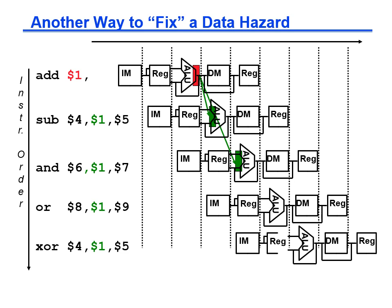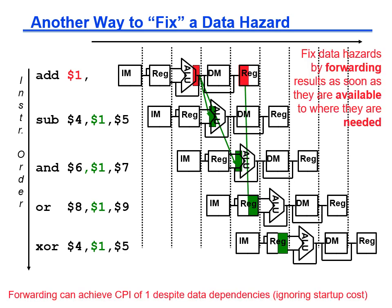Notice that for now we are showing the forwarded data coming out of the ALU, but it is really supplied by the pipeline registers EX/MEM or MEM/WB. Finally, the OR instruction continues to receive the value written to the register file and does not need forwarding because the register file is written before being read.